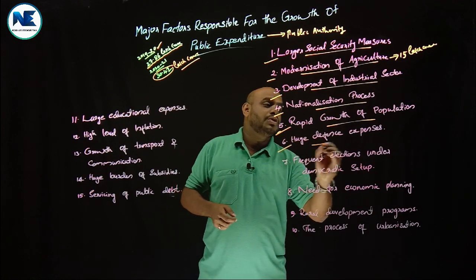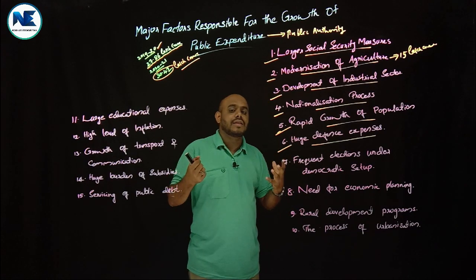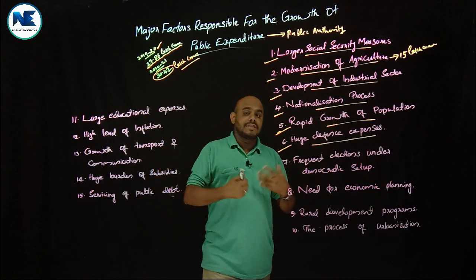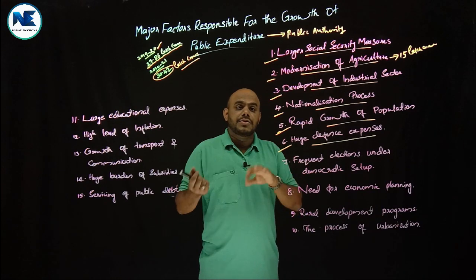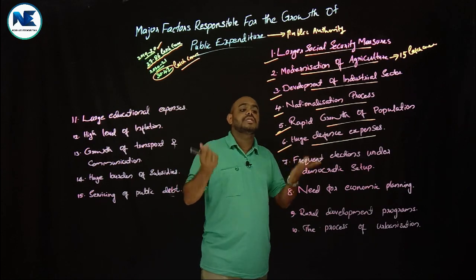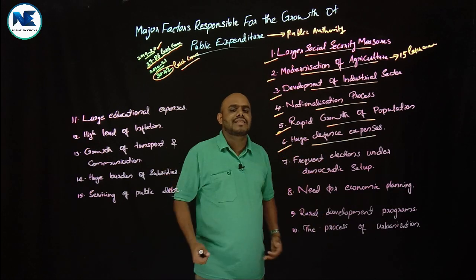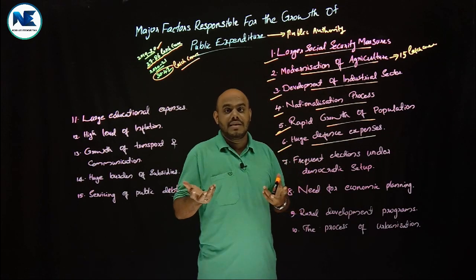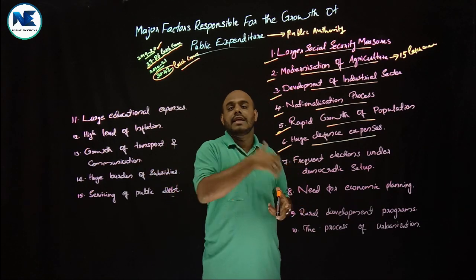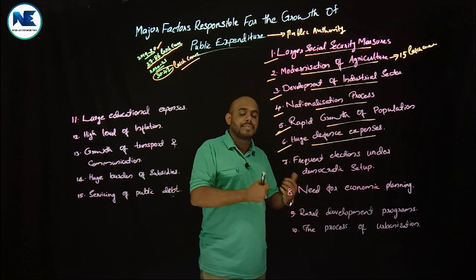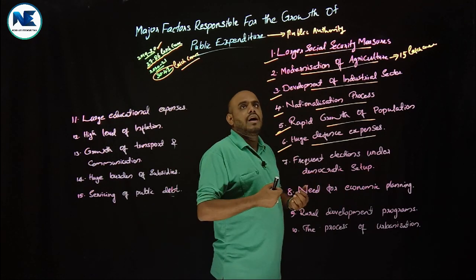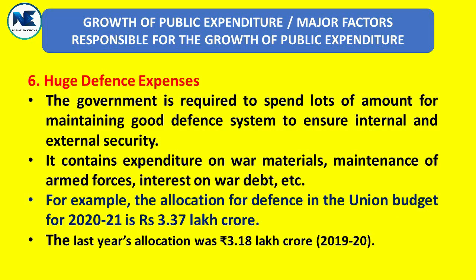The sixth point is huge defense expenses. Due to issues with countries like China and Pakistan, the government is spending a huge amount for defense. A large portion of the union budget is set aside for defense — covering the military, navy, air force, training facilities, equipment, and weapons. For example, the allocation for defense in the union budget for 2020-21 was rupees 3.37 lakh crore, up from rupees 3.18 lakh crore the previous year. Huge defense expenses are thus another factor for the growth of public expenditure.